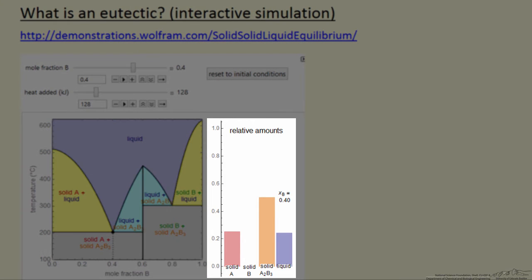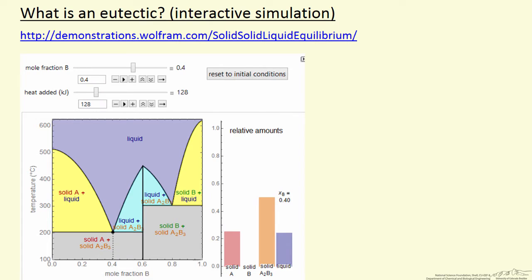and then on the right side, we have a bar graph that represents how much of each phase we have. This point here can represent a mixture of solid A, so this is A, this is pure B over here,